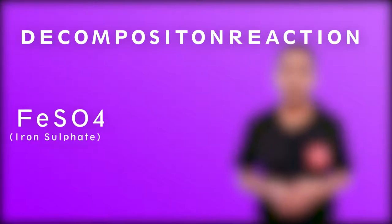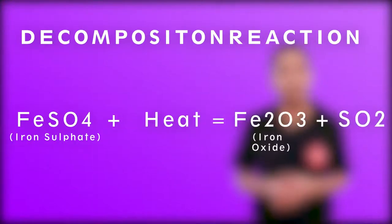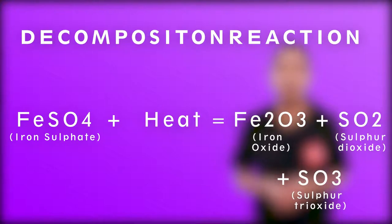Another such example is when iron sulfate is heated, it changes its color to light blue because of loss of water. The reaction taking place here is: when iron sulfate is heated, it forms iron oxide, sulfur dioxide, and sulfur trioxide. Also, there is release of a pungent smelling gas because of burning of sulfur.